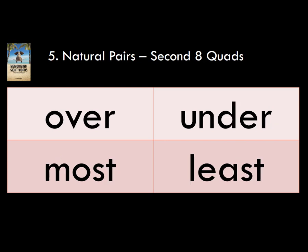In terms of numbers, if the number is over, then it is the most. If the number is under, then it is the least. So if you have the numbers one, two, three — three is over, it is the most; one is under, it is the least. Over, under, most, least.